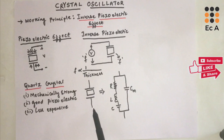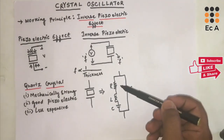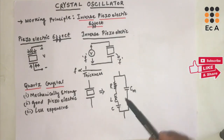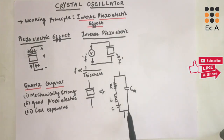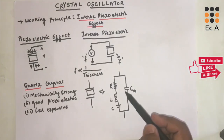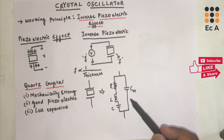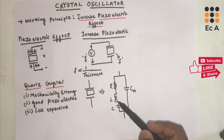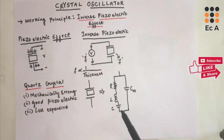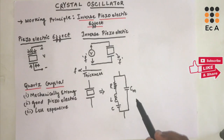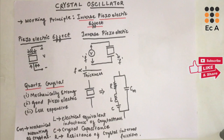This is the symbol of the crystal. The electrical equivalent circuit of the crystal consists of R, L, C in series along with a capacitor Cm connected in parallel. Here R is the electrical equivalent resistance of the crystal's internal friction, L is the electrical equivalent inductance of the crystal mass, C is the electrical equivalent of crystal capacitance, and Cm is the capacitance due to mechanical mounting of the crystal.